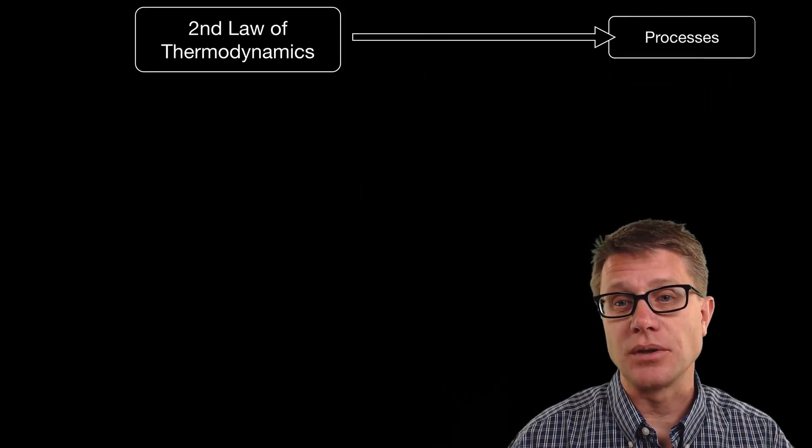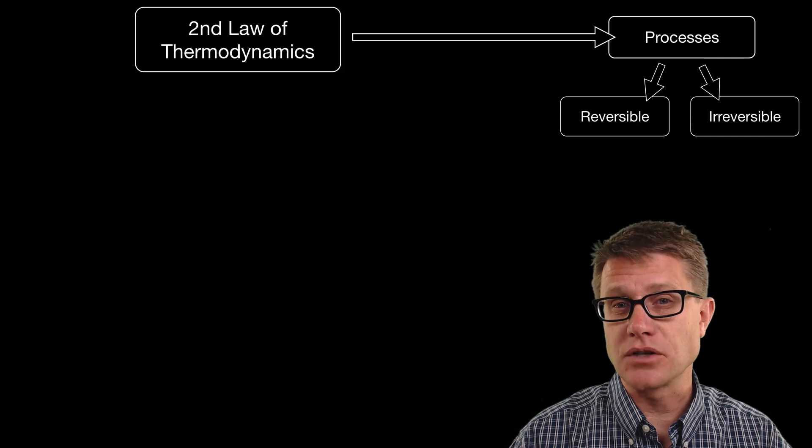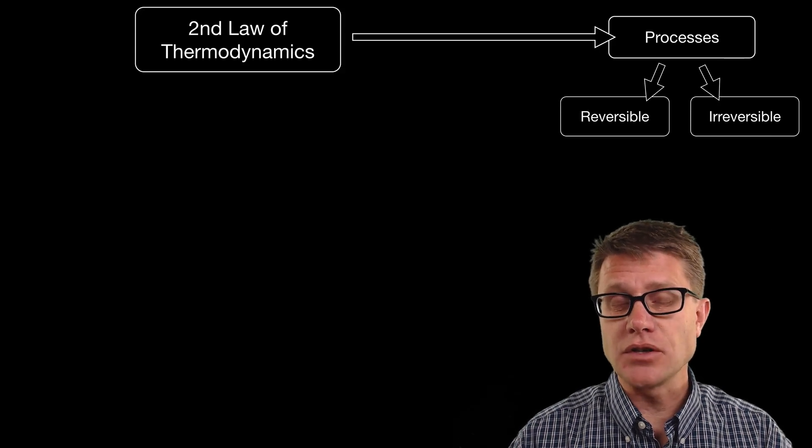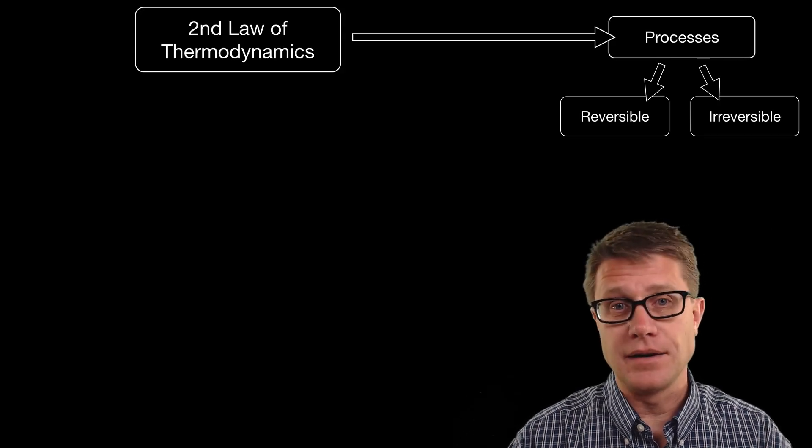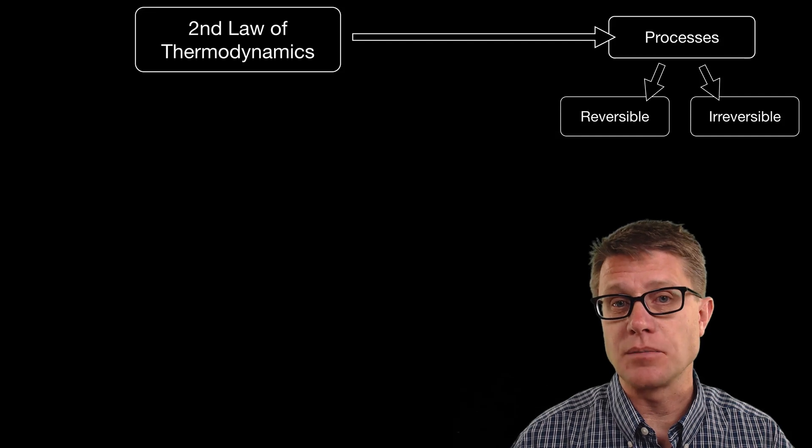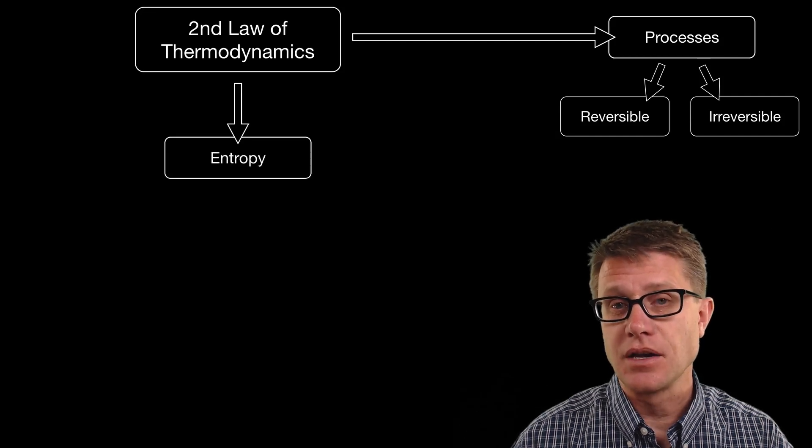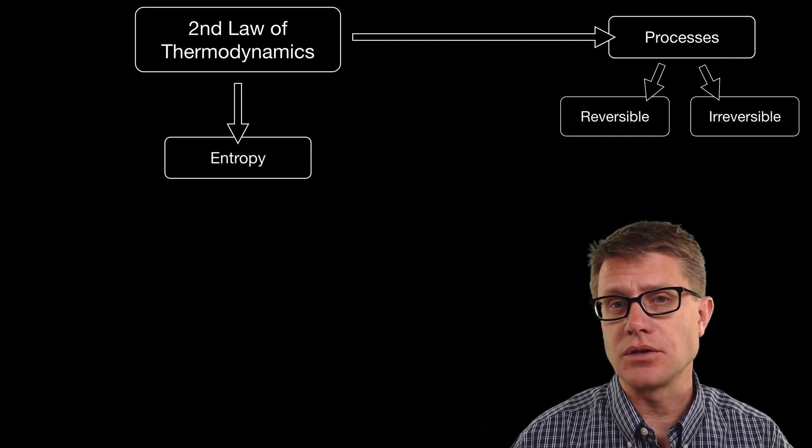The second law of thermodynamics relates to processes that can either be reversible or irreversible. Reversible means they can go either way and the amount of entropy won't change. But in an irreversible process, the amount of entropy will increase over time.